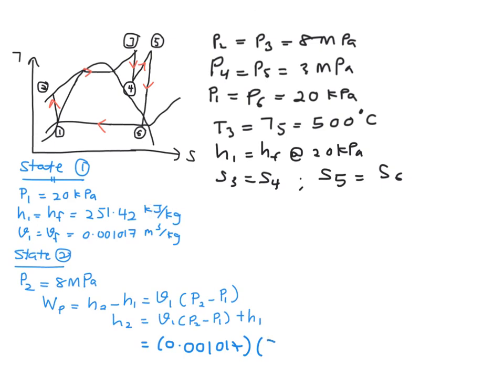So your P2 now will become 8,000 kilopascal minus with your 20 kilopascal and plus with your 251.42 kilojoule per kg of H. So now your H2 will be 259.54 kilojoule per kg.